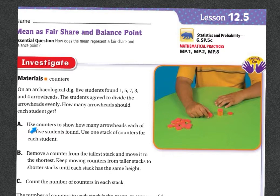A. Use the counters to show how many arrowheads each of the five students found. One stack of counters for each student. Then B. Remove a counter from the tallest stack and move it to the shortest stack. Keep moving the counters from the taller stacks to the shorter stacks until each stack has the same height.